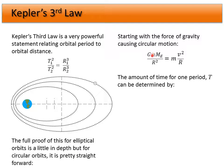We can see that one mass will cancel, and one of the r terms will cancel as well. Before completing the substitution, we also need the period relationship: how long is one period? A period is determined by velocity and circumference. The time to complete one full cycle satisfies 2πr equals velocity times the period T.